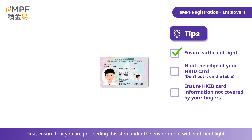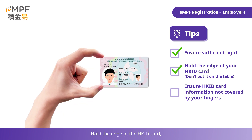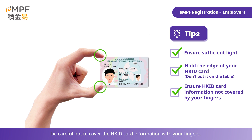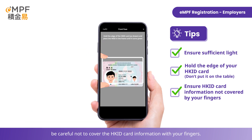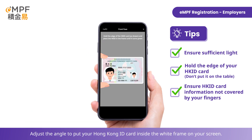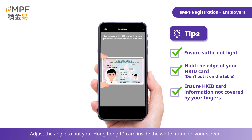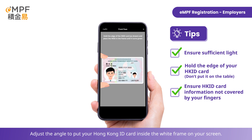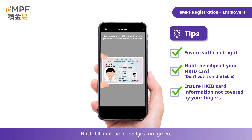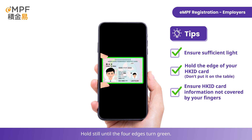Hold the edge of the Hong Kong ID card — be careful not to cover the Hong Kong ID card information with your fingers. Adjust the angle to put your Hong Kong ID card inside the white frame on your screen and hold still until the four edges turn green.